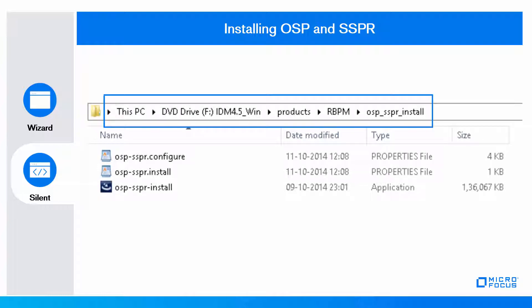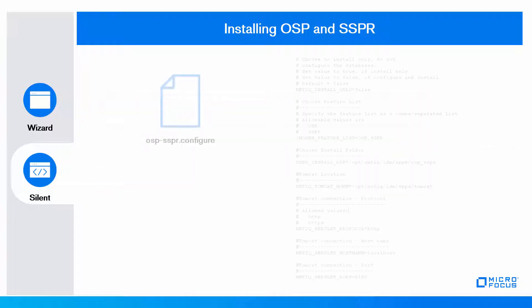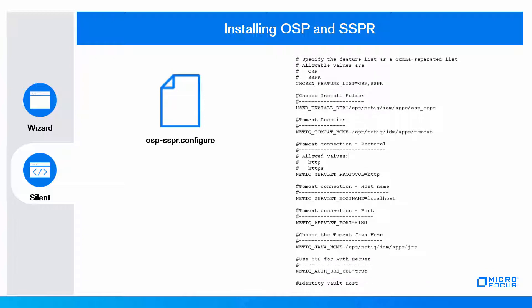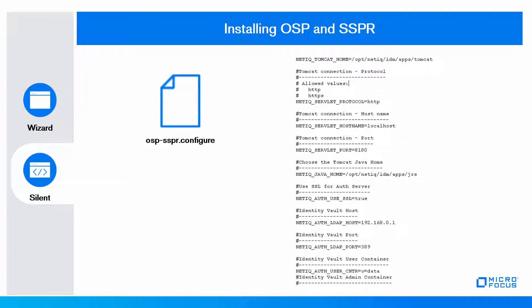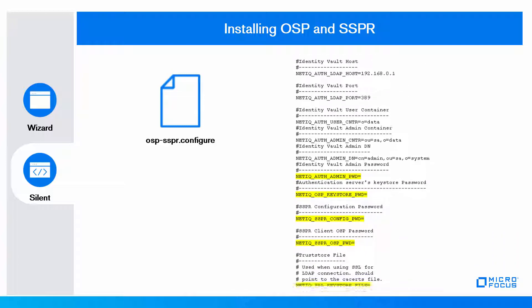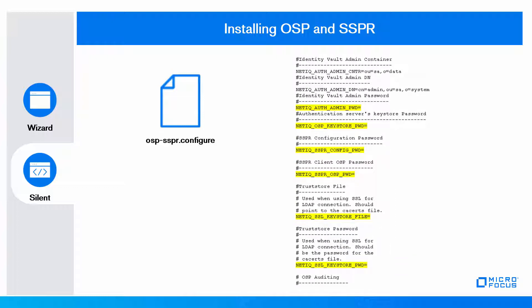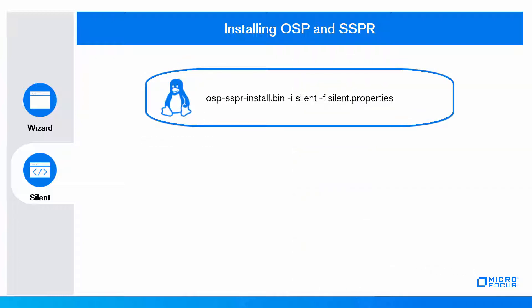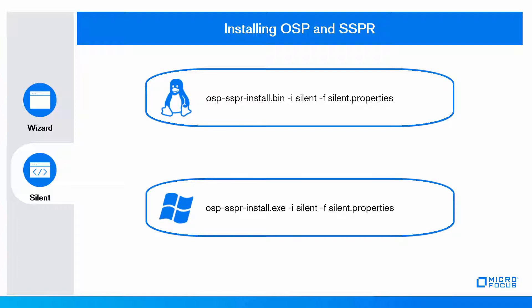Now let us perform a silent installation of these components. Find the silent properties file in the specified path. Edit the OSP SSPR configuration file to specify the paths and IP addresses for your installation. Specify the values for NetIQ auth admin password, NetIQ OSP key store password, NetIQ SSPR config password, and NetIQ SSPR OSP password. Also specify the NetIQ SSL key store file and SSL key store password. If you are installing on a Linux machine, use the Linux command; for Windows installation, use the Windows command.